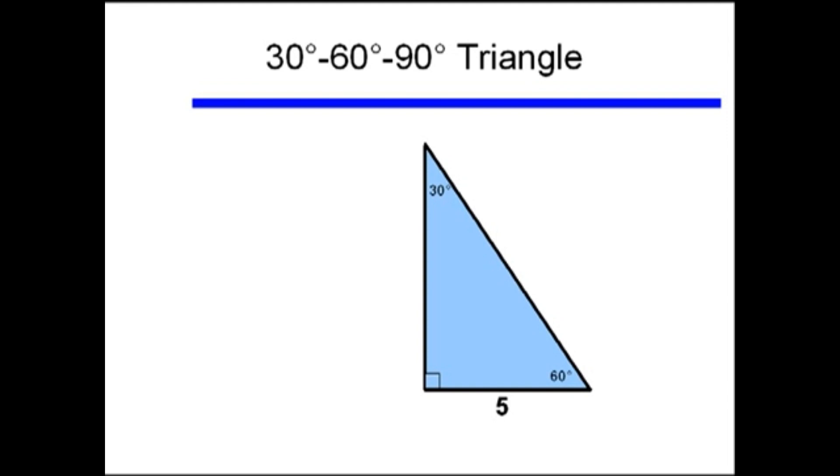But what if I had a 30-60-90 triangle, and I was told that the length of the short side, the length opposite the 30 degrees, was length 5. Well I know that my original triangle was length 1, square root of 3 and 2, but now I have a length 5. Well if I remember from my similar triangles, that two similar triangles, that is triangles with the same angles, the ratio of the lengths of the sides is the same.